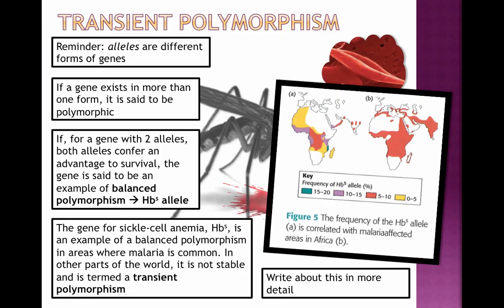When discussing evolution, one mechanism is changing allele frequencies. Alleles are different forms of a gene, differing by perhaps a few bases — a gene being a strand of DNA coding for a specific protein when transcribed and translated. Many genes have more than one form, like dominant and recessive, or blood types with three different forms. If a gene exists in more than one form, it is said to be polymorphic. If both alleles of a gene confer a survival advantage, both are said to represent balanced polymorphism.